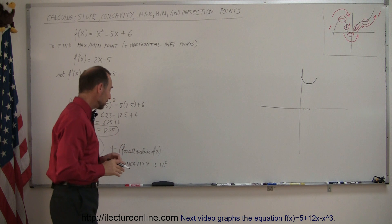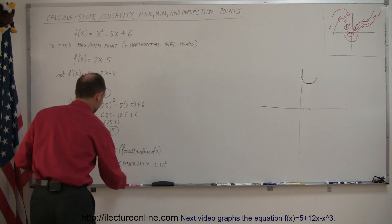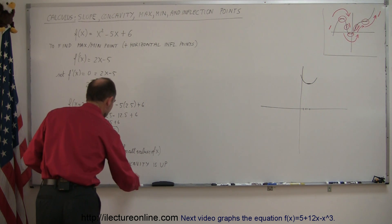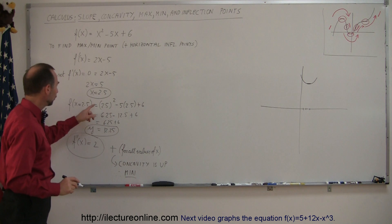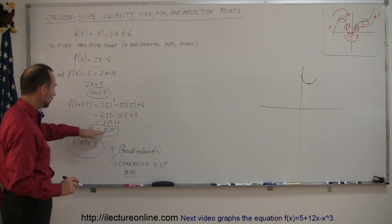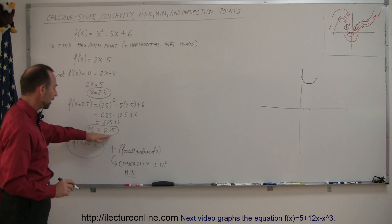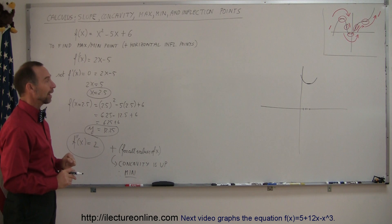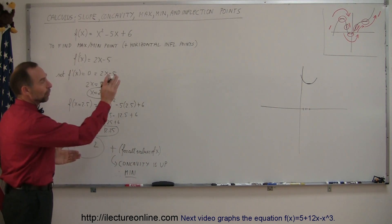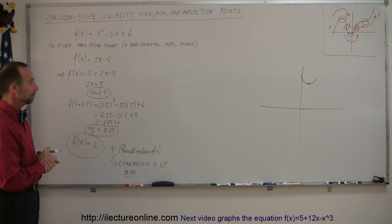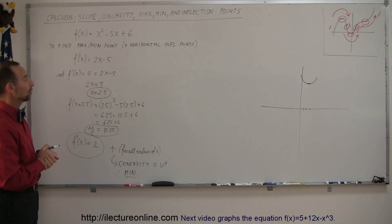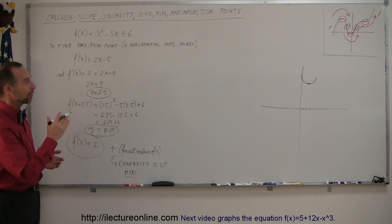Since the concavity is up, I must have something that looks like a upward-opening curve. Therefore, I'm dealing with a minimum point. Where x is equal to 2.5 and y is equal to 12.25, I have a minimum point on the graph. The concavity is up, so it must look like that.